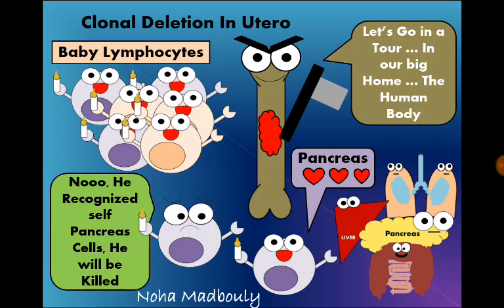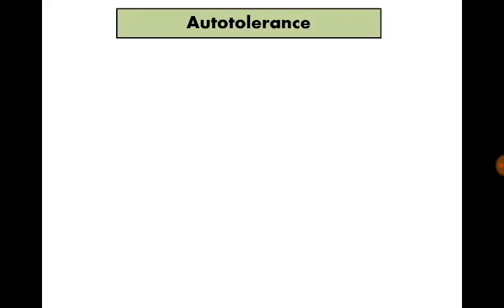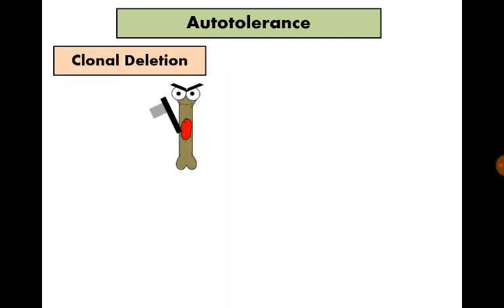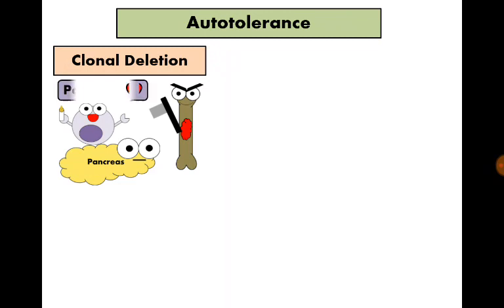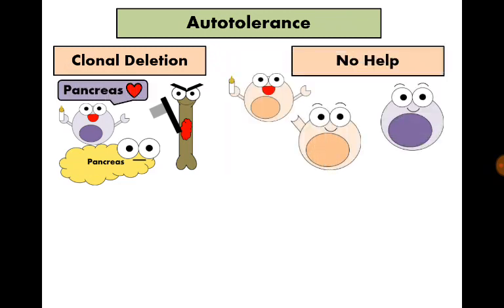This process is called clonal deletion, and it protects our bodies from being attacked by immune cells. So our immune system has auto-tolerance — tolerance to all self-antigens — and this is because of clonal deletion that occurred in utero. If there is a lymphocyte that recognizes a self-antigen and escaped these processes, it will not find any help from other immune factors.